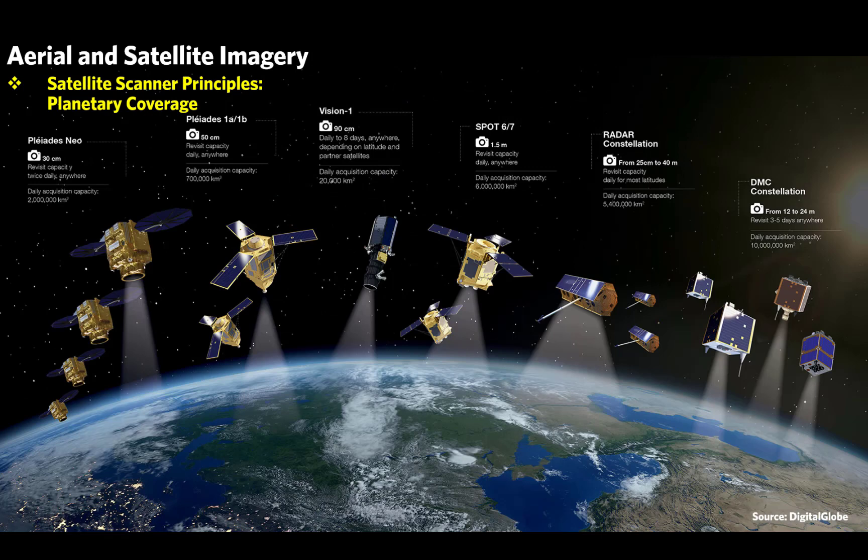Other satellite constellations include Pleiades Neo, Pleiades 1A and 1B, Vision 1, Spot 6 and 7, the Radar Constellation, and the DMC Constellation. There's a lot of difference in data acquisition capacity — some cover 2 million square kilometers, others 10 million square kilometers. The DMC constellation has resolutions of 12 to 24 meters, the Radar Constellation ranges from 25 centimeters to 40 meters, and Pleiades Neo offers better resolutions.